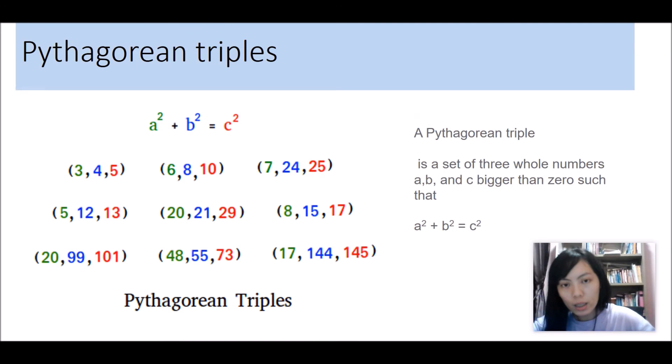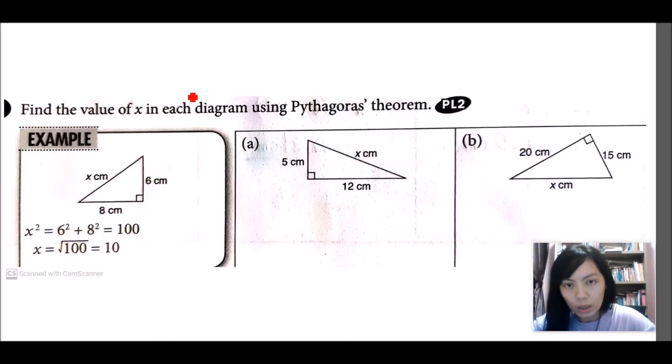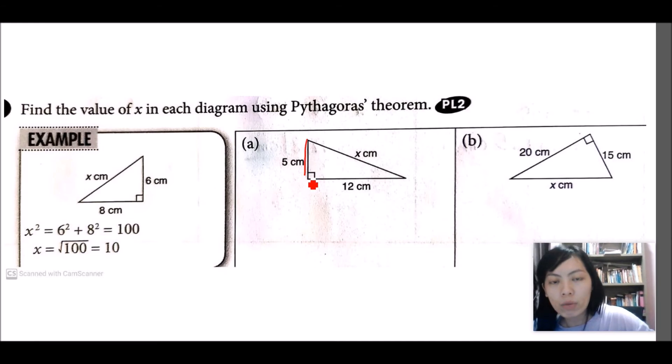Now, this is the question. This side here is 5, this is 12. What is x? X is 13. Why? Because 5, 12, 13.